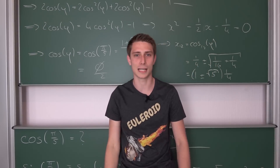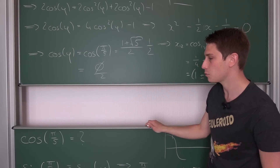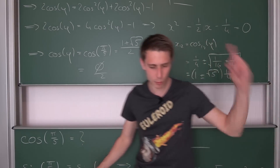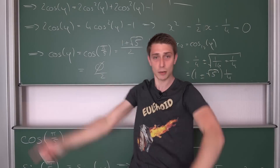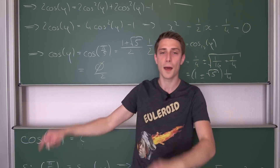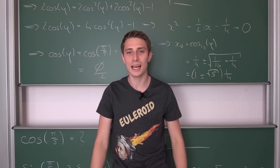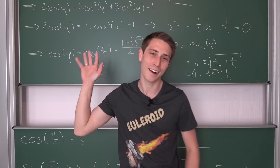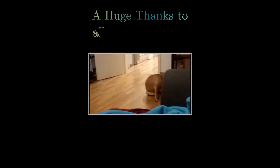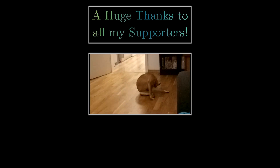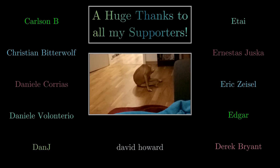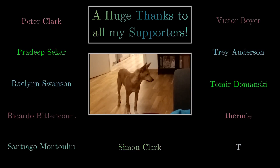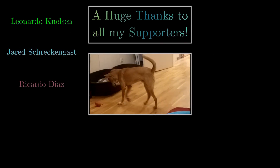Isn't that absolutely amazing? The cosine of π/5 is the golden ratio over 2 — that's why I used φ in the first place, to hint that the two are connected. Thank you guys for watching. If you enjoyed this video, please like, subscribe, and share. Support the channel on Patreon, check out PapaFlammy2, and until next video, I wish you guys a flammable day. Ciao!